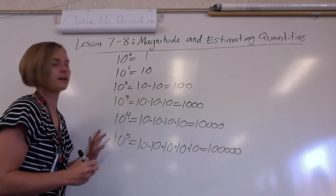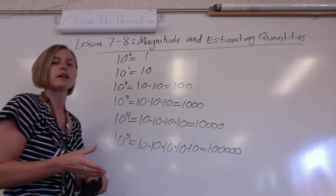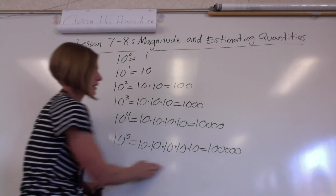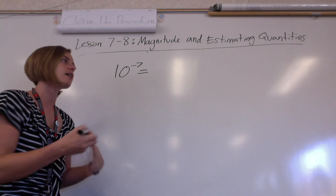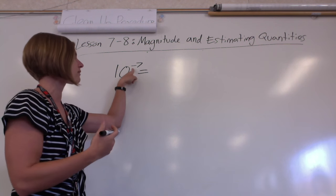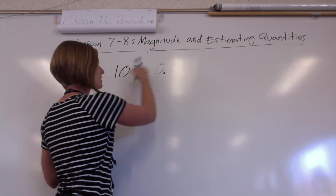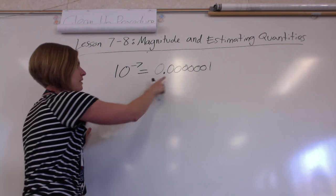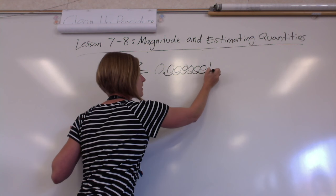Hopefully you're seeing a pattern here. When we had a negative exponent you're getting something smaller, and when you have a positive exponent you're getting something bigger. You might notice that whenever you have a negative you have one less of that many zeros and then a one. So for 10 to a negative 7, you'd have six zeros — one two three four five six — and then a one, because negative 7 says the one is seven decimal places behind the decimal.